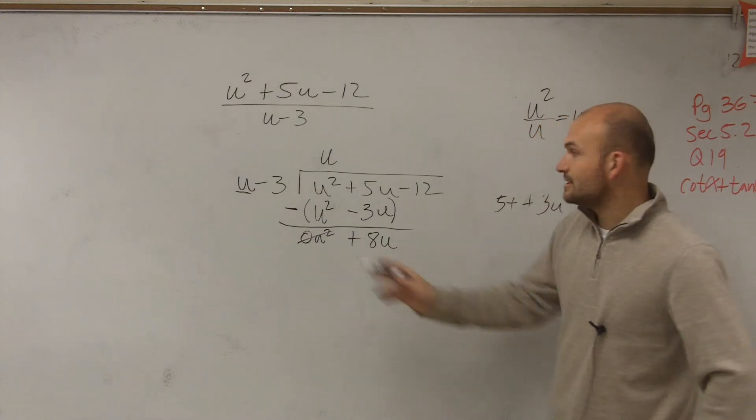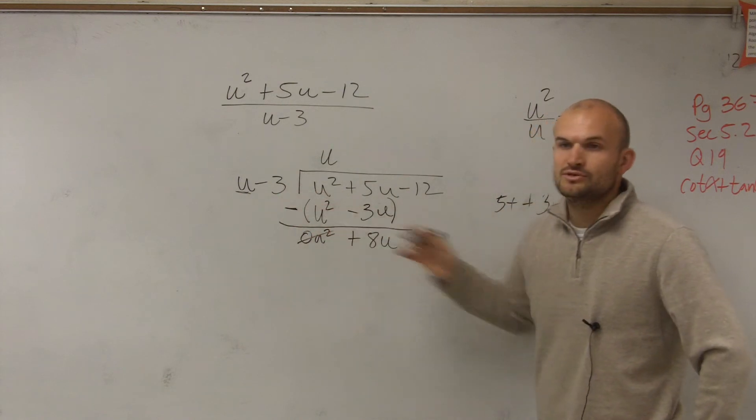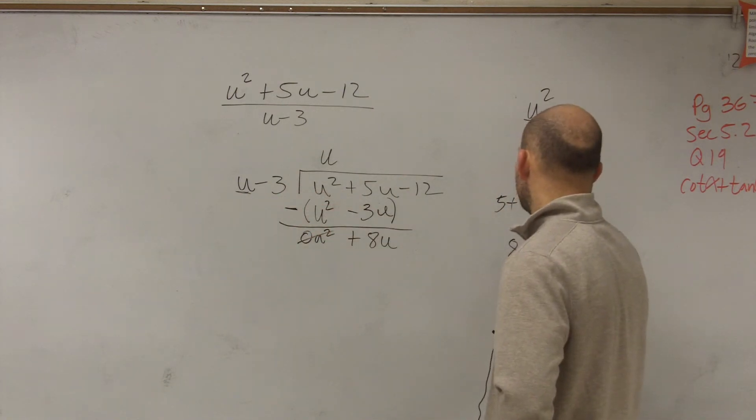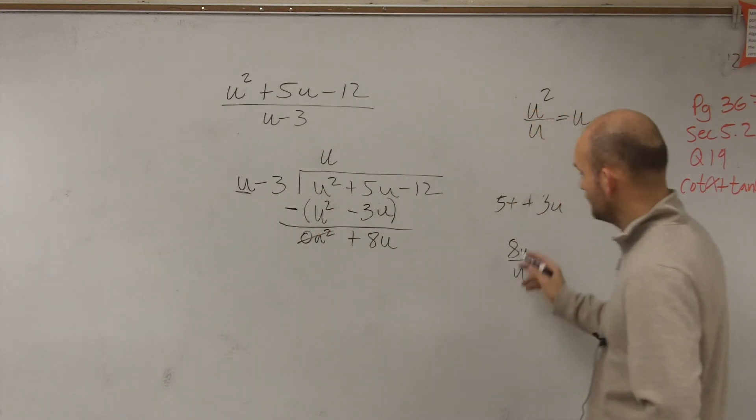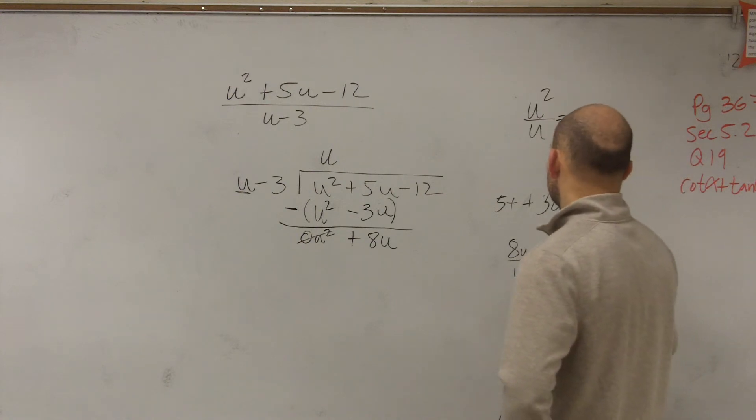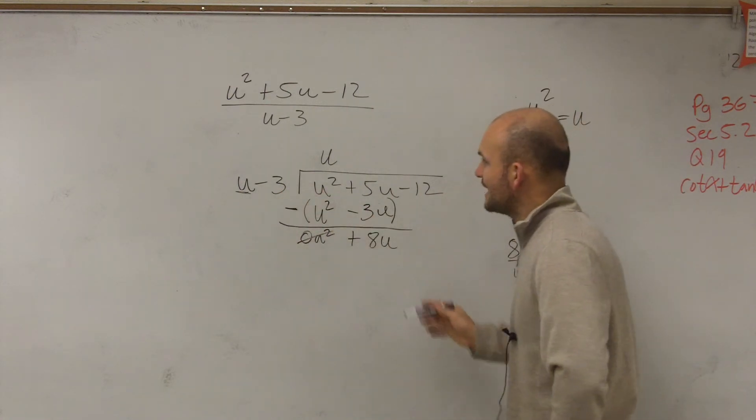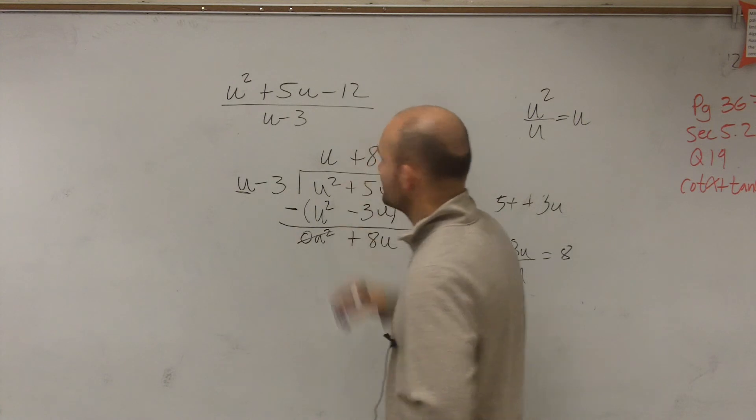All right, so now we just say, how many times does u divide into 8u? So you just do 8u divided by u. 8u divided by u equals 8. So u divides into 8u positive 8 times.